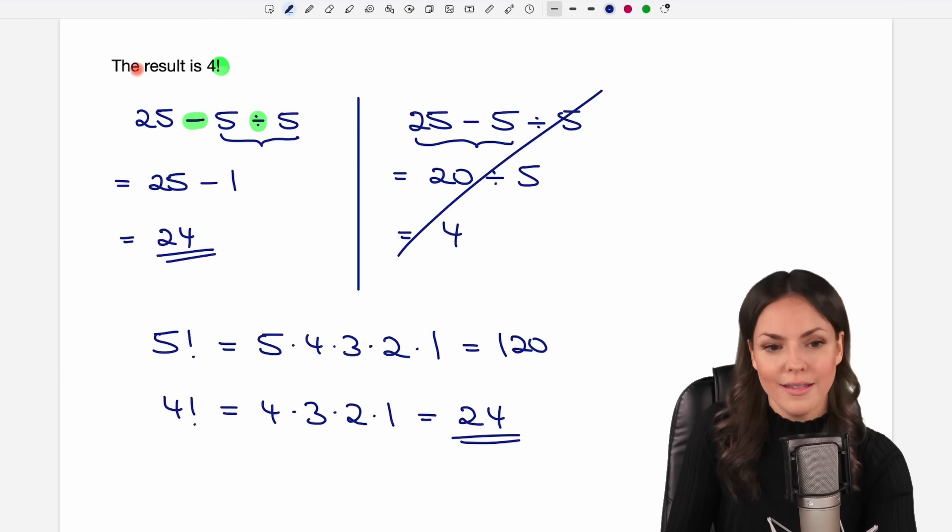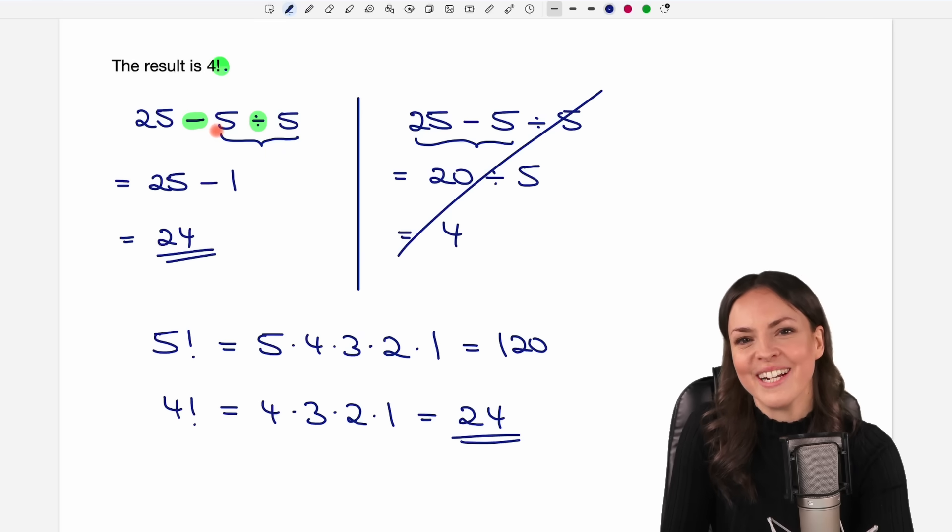Oh, this is correct what they say here. The result is 4 factorial. So it depends on how you read it. Some people might say that you have to do a period here at the end. Well, otherwise the joke wouldn't have been that nice.